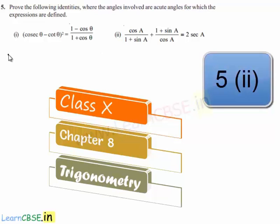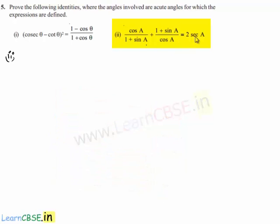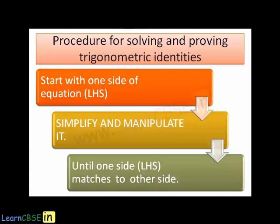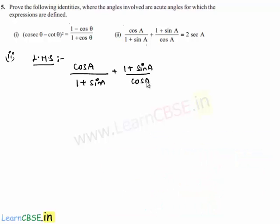Now moving on to the second bit of the fifth problem. He has asked us to prove that cos θ / (1 + sin θ) + (1 + sin θ) / cos θ = 2 sec θ. Let us consider the left hand side and simplify, taking LCM as (1 + sin θ) · cos θ.